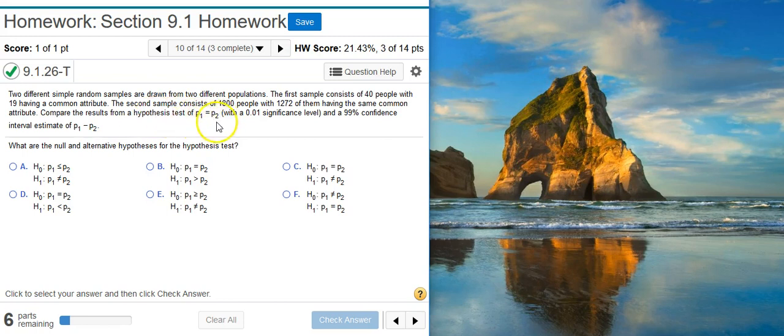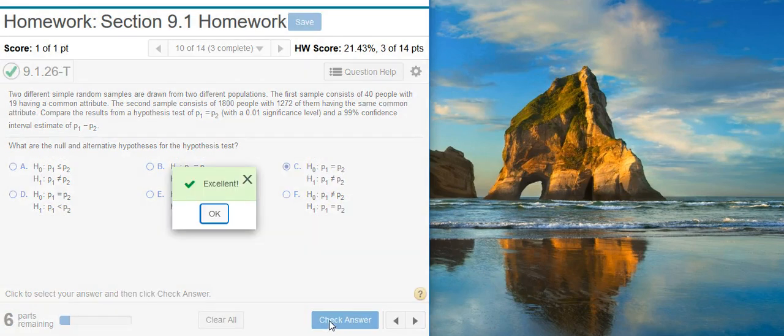Here it says compare the results from a hypothesis test of p1 equals p2. Right here, what we're saying is that the claim is that the population proportions are equal to each other. That's the claim. Well, equality by definition belongs to the null hypothesis. So therefore, we want to take the complement of this, and that's going to be not equal to. So looks like c is going to be our correct answer here. Excellent!